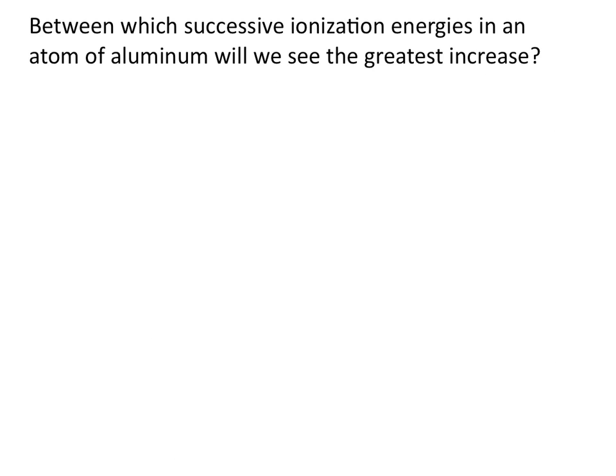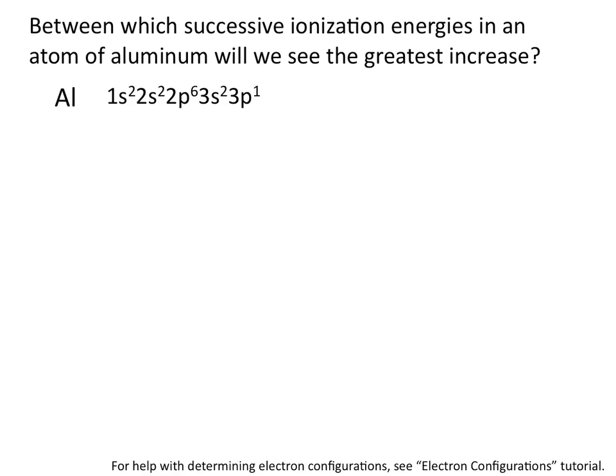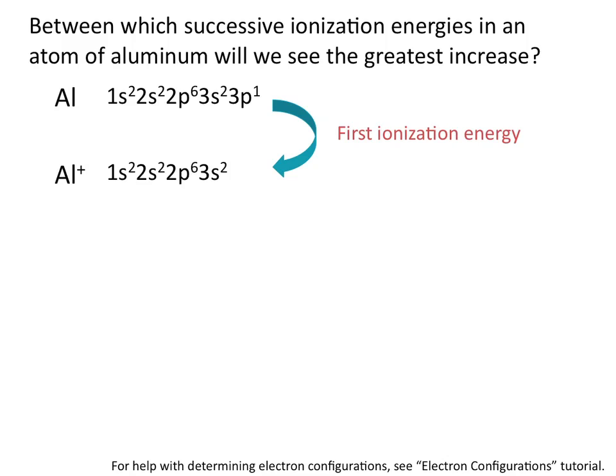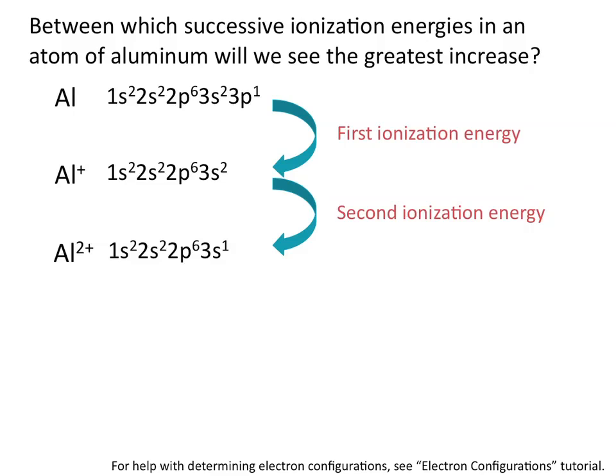Between which successive ionization energies in an atom of aluminum will we see the greatest increase? The removal of the first electron is the first ionization energy, the removal of a second electron is the second ionization energy, and so on. Here I've drawn out the electron configuration for aluminum. The first ionization energy is the energy required to remove the 3p electron. The second ionization energy will remove an electron from the 3s shell.